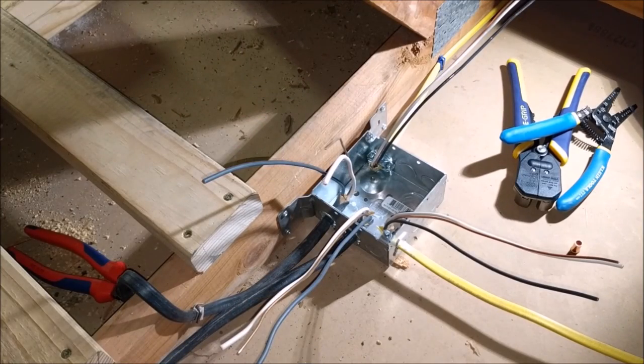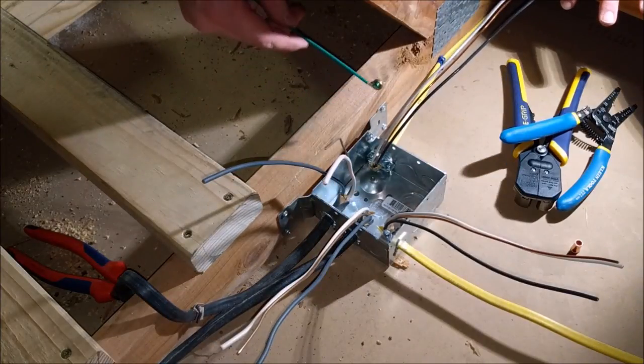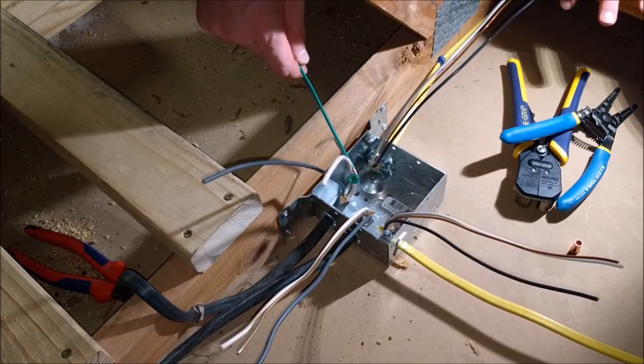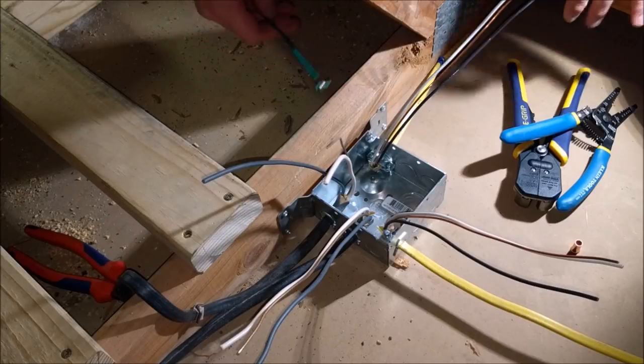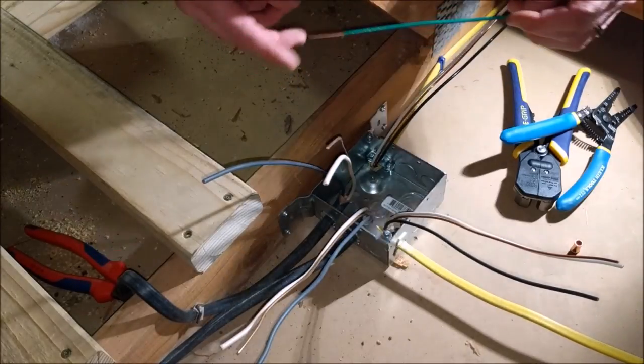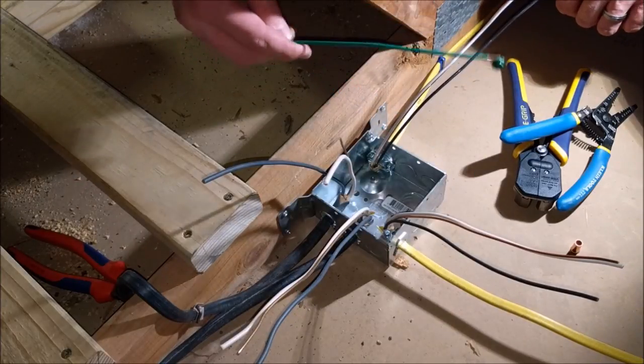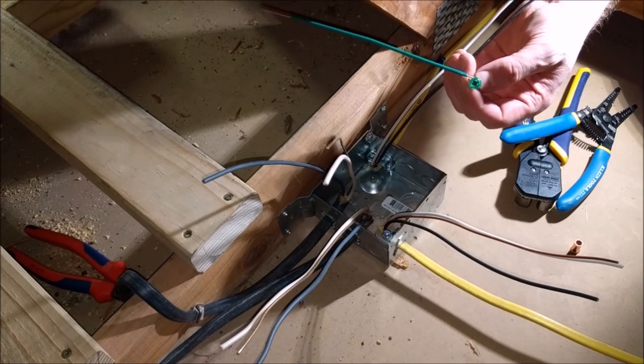So we've got all of our wires stripped that we need to and separated. We've got four wires coming in here. This one's the main, and then these are going to various other connection points. But the first thing we want to do is attach ground. You have to remember when you're using a metal box to get a separate ground screw, one of these.